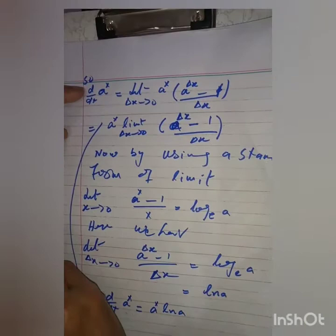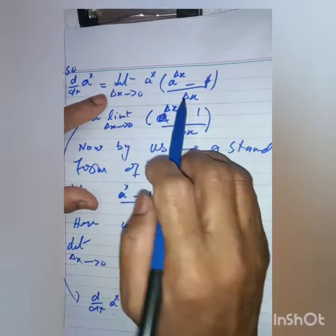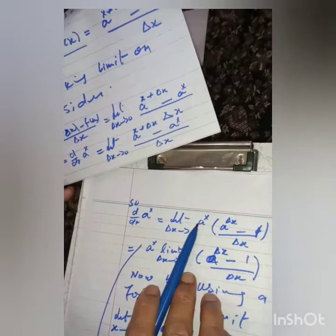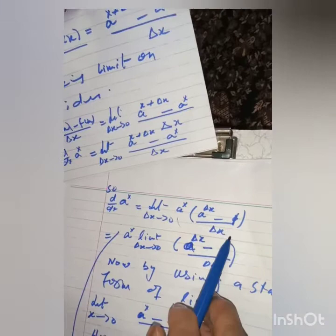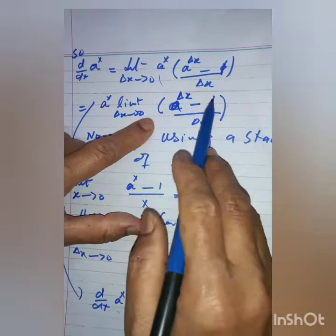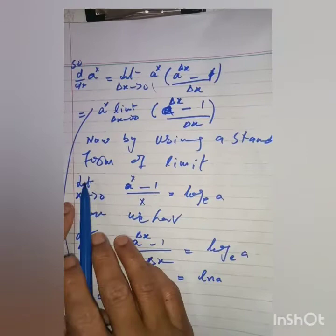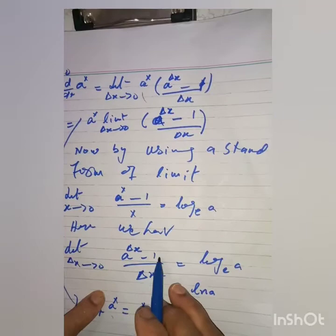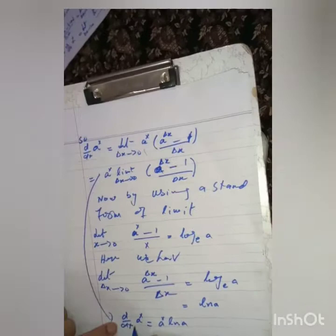So d by dx of a to the power x will be equal to limit as delta x goes to 0, a to the power x into a to the power delta x minus 1 dividing by delta x. We have taken a to the power x common from these two values. Now by using a standard form of the limit: limit as delta x goes to 0 of a to the power delta x minus 1 dividing by delta x equals log to the base e of a, which is ln of a. So the derivative of a to the power x, d by dx of a to the power x, will be equal to a to the power x into ln of a, the natural log of a.